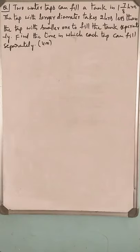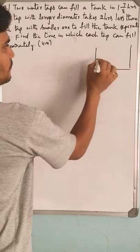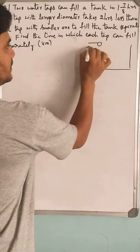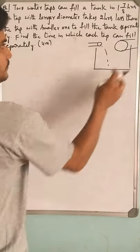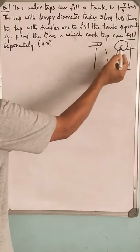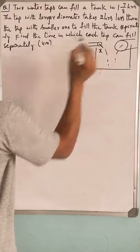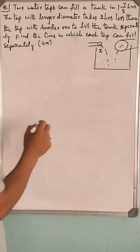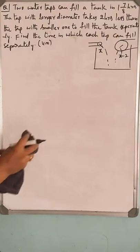I think you have understood that there are two taps - one with smaller diameter and another with larger diameter. Let me show you diagrammatically. Suppose this is the tank you have to fill with the taps. This is the smaller diameter one and there would be another one with larger diameter. The tap with larger diameter takes two hours less than the smaller one. If the smaller tap takes x hours, it will take x minus 2 hours. Like that we will proceed with the solution.